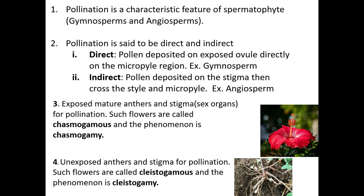Pollination is a characteristic feature of spermatophytes, that is gymnosperms and angiosperms. Pollination does not occur in bryophytes and pteridophytes or algae, because there are no pollen grains in those groups. Hence pollination is the characteristic feature of both gymnosperm and angiosperm, collectively called spermatophytes.